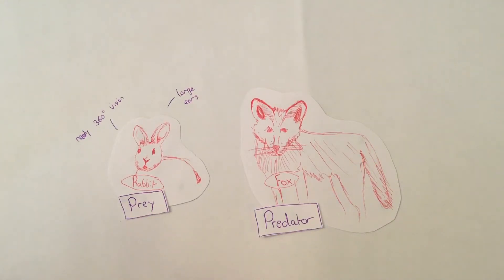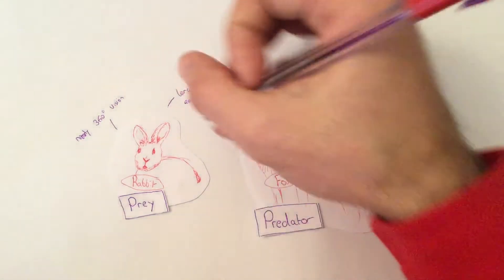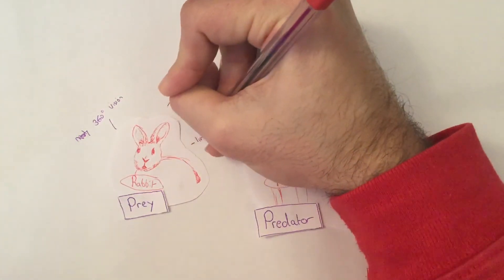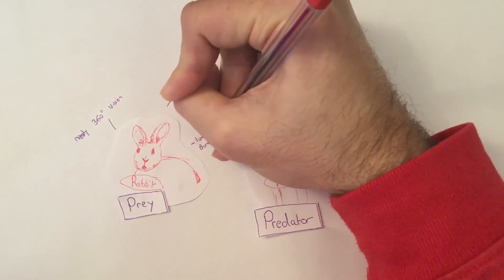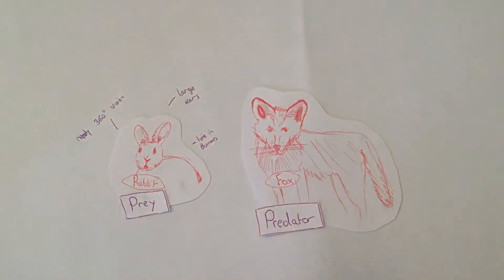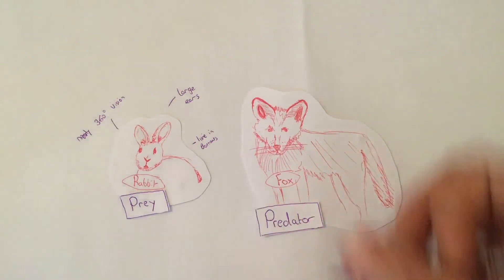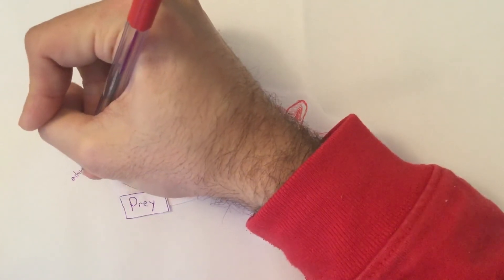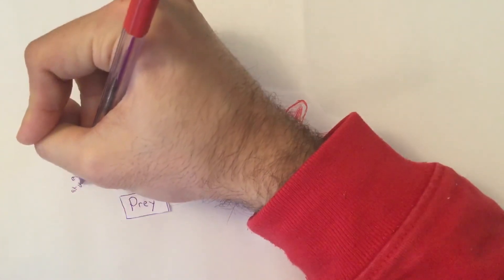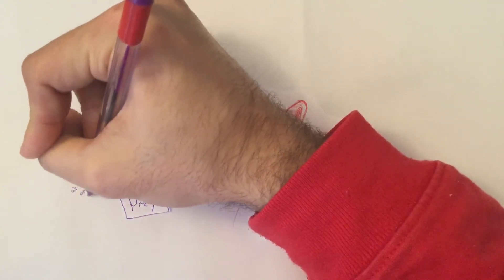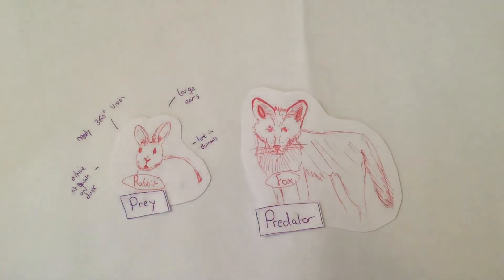Other features of the rabbit: they live in burrows, and these burrows allow the rabbit to get away from predators and escape effectively — the predator is not often going to fit down into the burrow. They are also often active at dawn and dusk when the light is lower, so it is harder for predators to spot them.